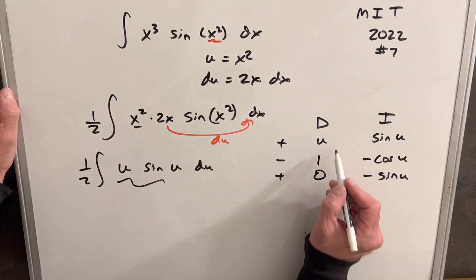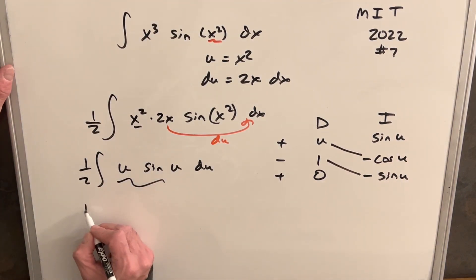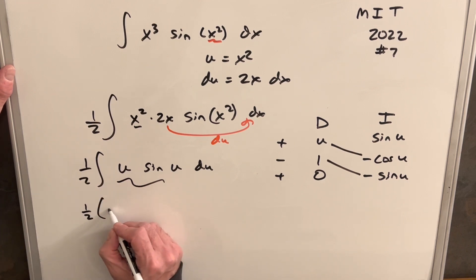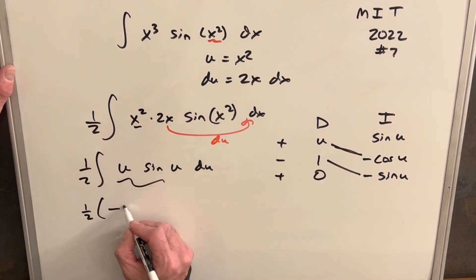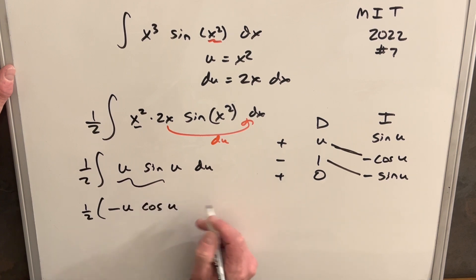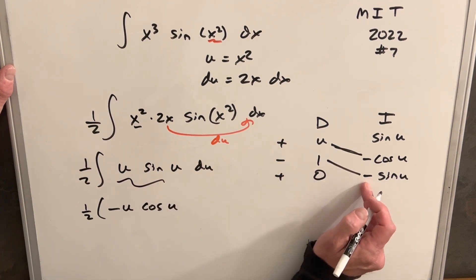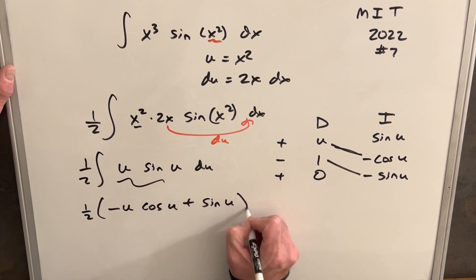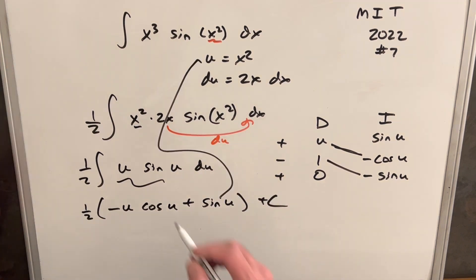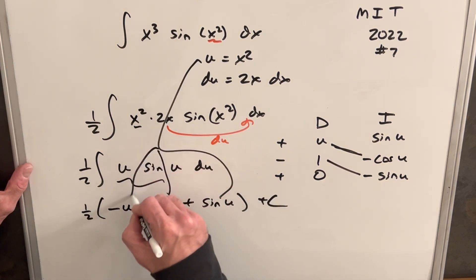For our solution we use the diagonal. Let's not forget our half out front. Doing the first diagonal term we get minus u cosine u, and then minus times minus gives a plus, so we get plus sine u, plus C.